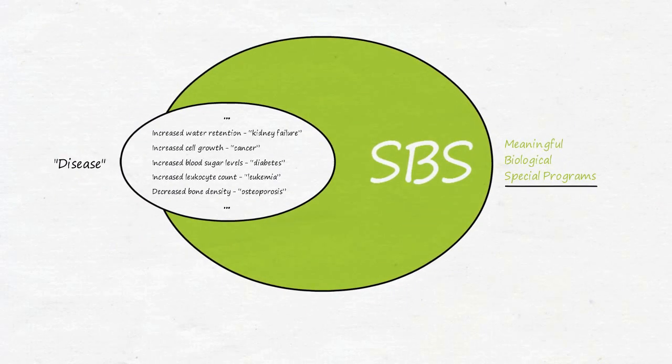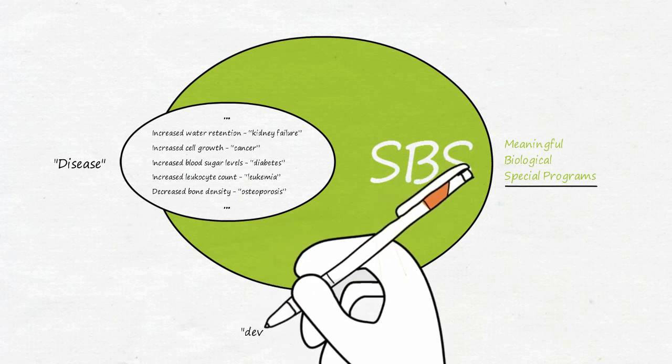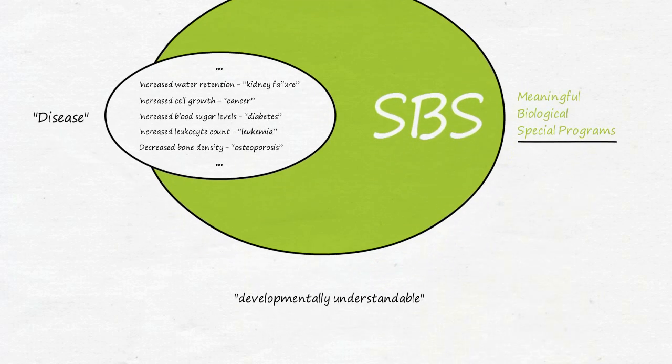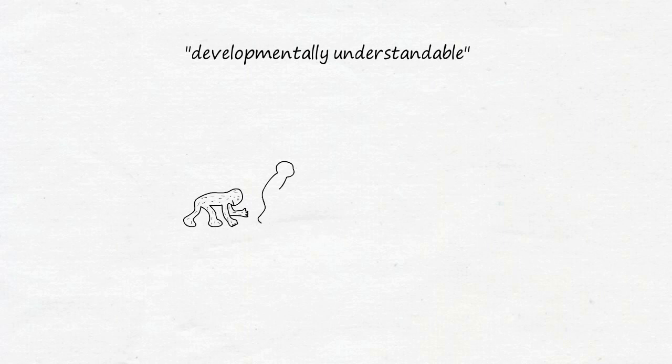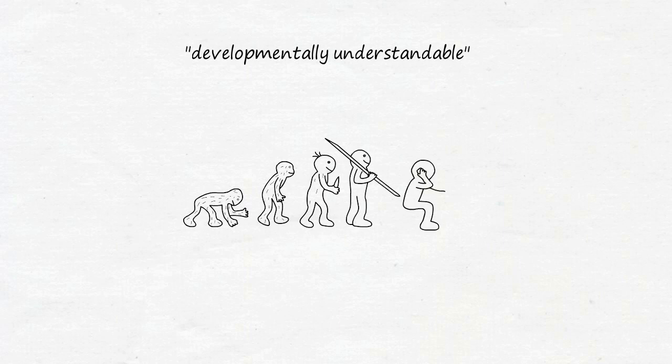Almost everything we have until now referred to as disease occurs within the framework of such a meaningful special biological program. Today we have cataloged well over 100 different such developmentally understandable programs. Developmentally understandable means that in the original natural way of life, these programs are meaningful and aid survival in difficult situations, as shown in the examples. Let us examine the same examples in a modern, unnatural way of life, typical of civilized humans.